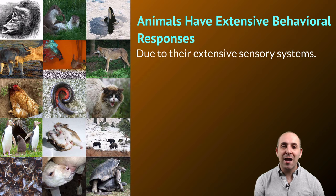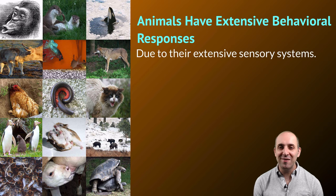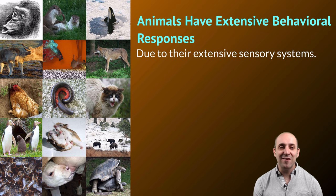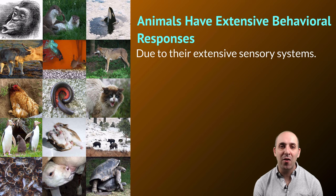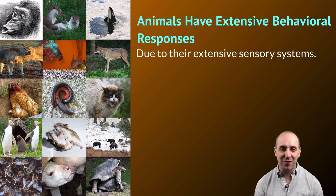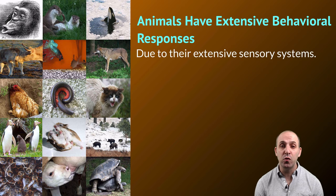The only thing unique about animals in terms of behavior is the extent of their behavioral responses, and this is in turn connected to their extensive sensory systems and ability to get information about the environment. Animals have the most extensive sensory systems among biological lineages, and as a result they have the most extensive behavioral responses. For the rest of this video, we're going to focus exclusively on animals due to the extent of their behavioral responses.